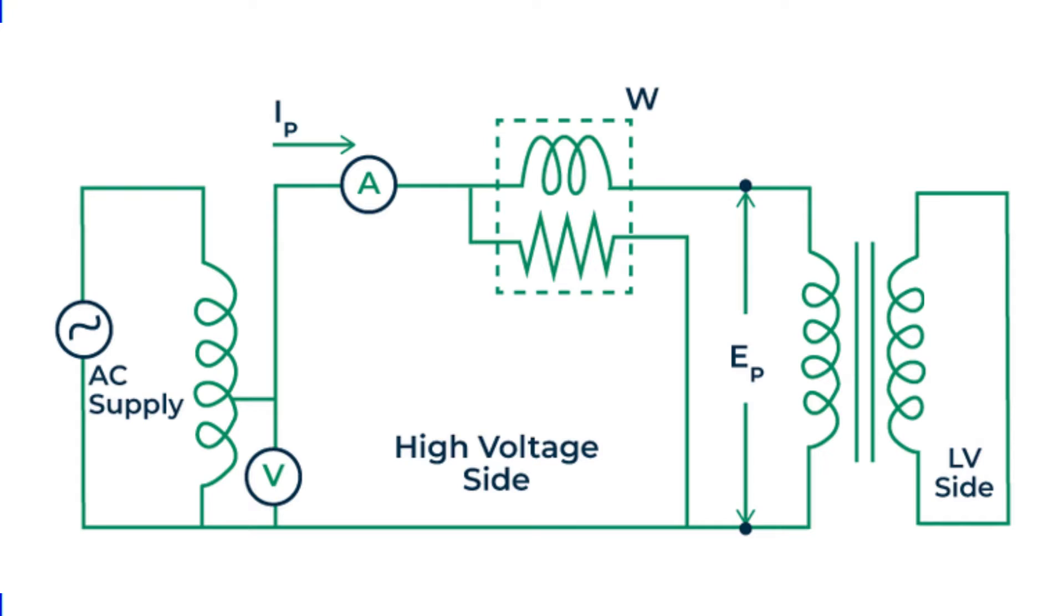So when we talk about percentage impedance, you can think of it this way. It's the percentage voltage of the rated voltage that's required to circulate the rated current flow through one transformer winding when the other winding is short-circuited at the rated tap position of the transformer.